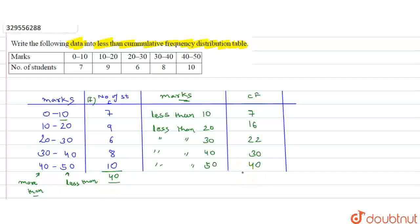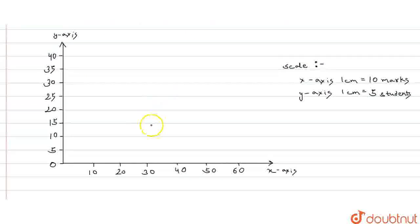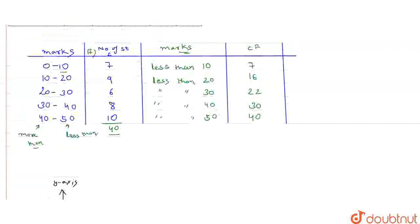Now we will represent this on an ogive, on a graph. We will represent this on a graph table, so we will roughly draw it here. So here we have the graph. Here we have the x-axis where we represent marks, and on the y-axis we represent students. Here we have marks and here we have students.